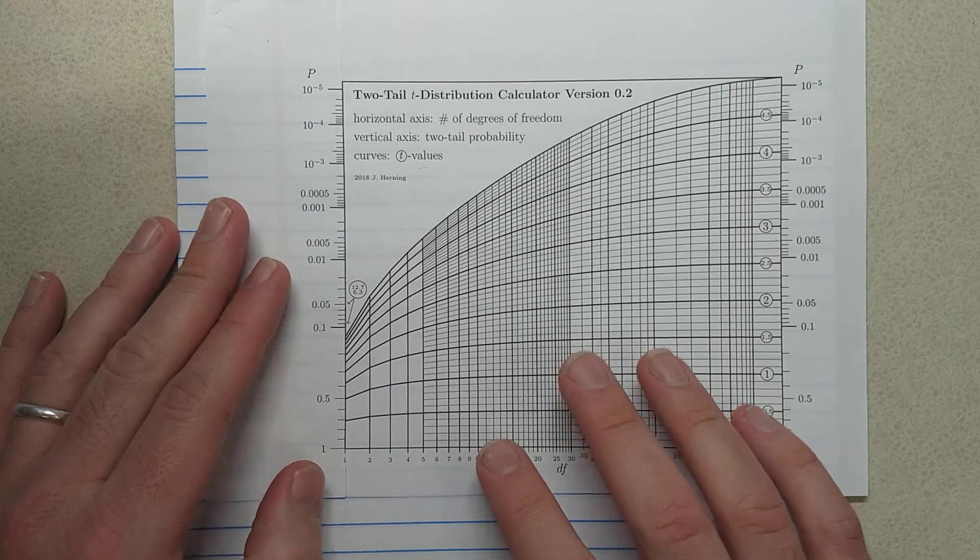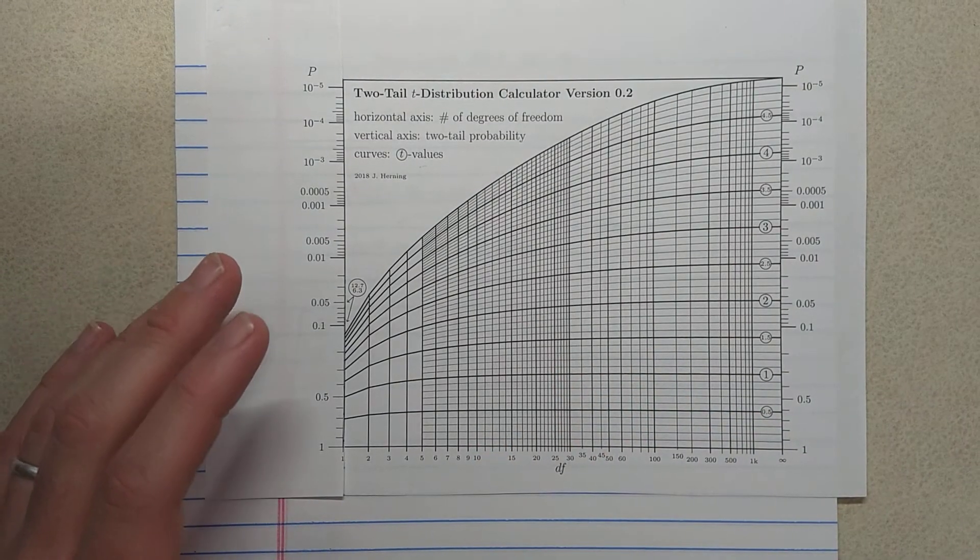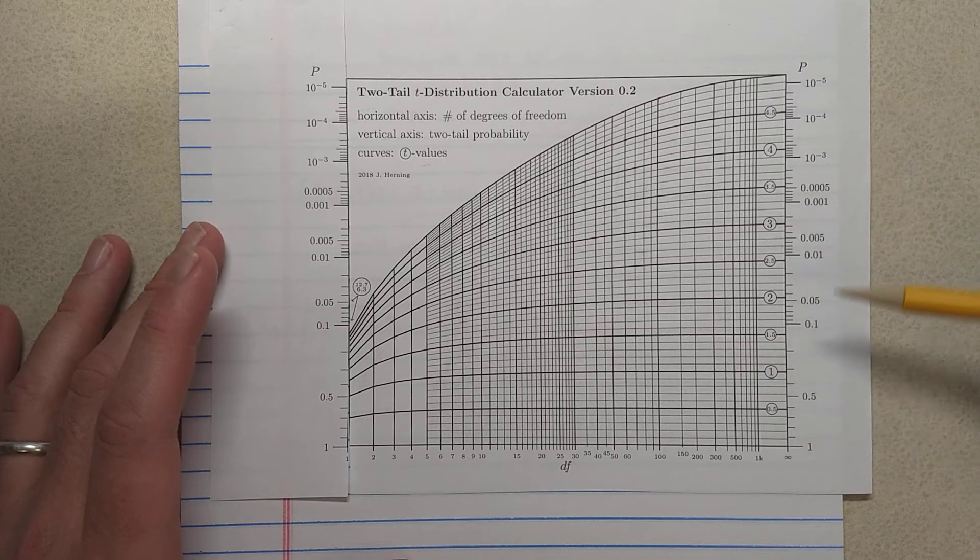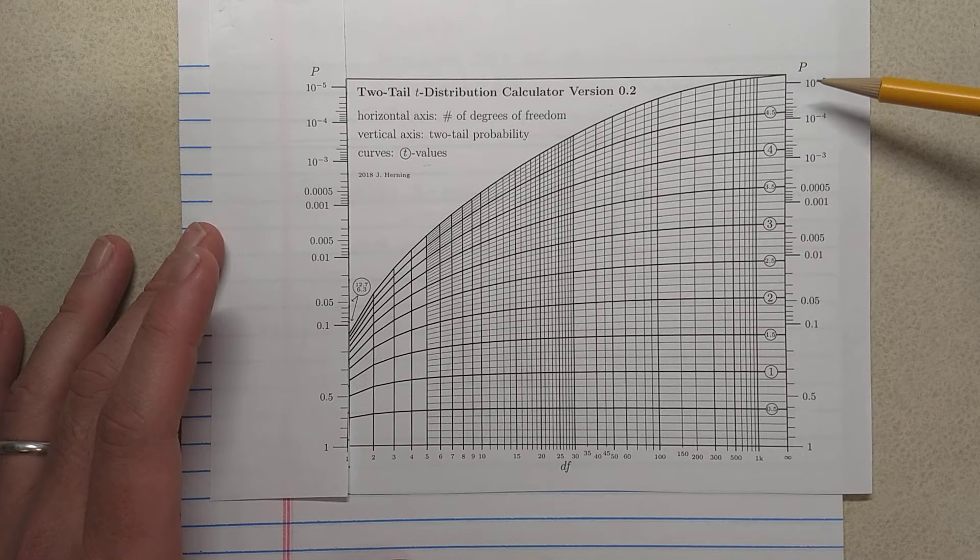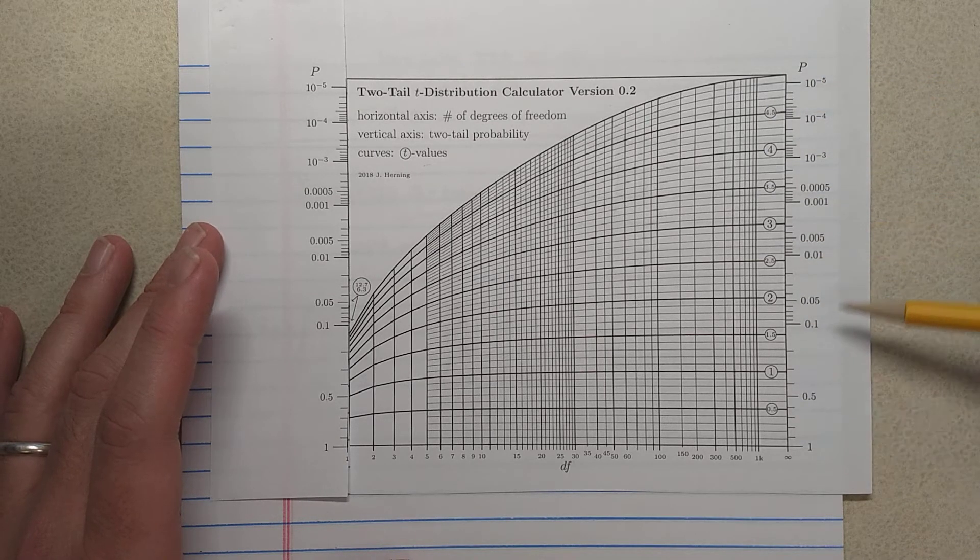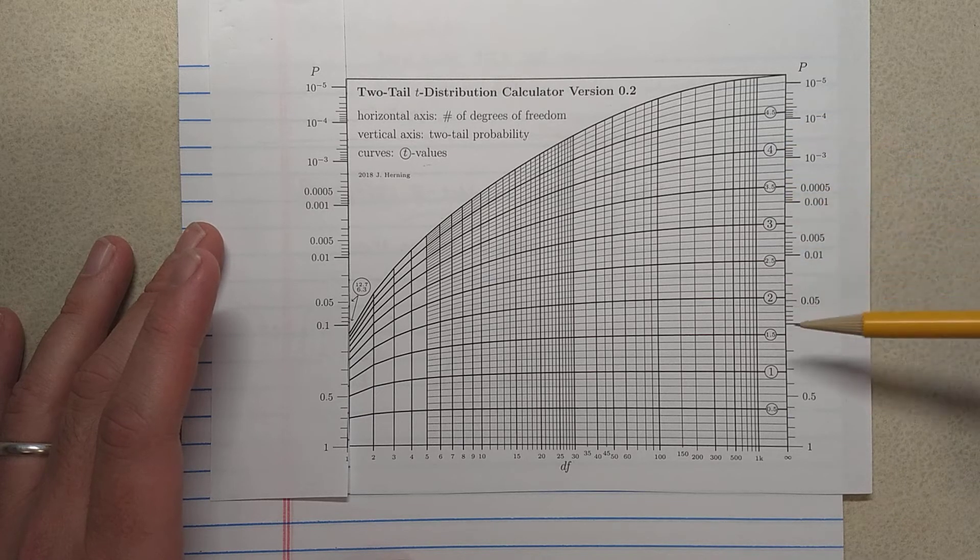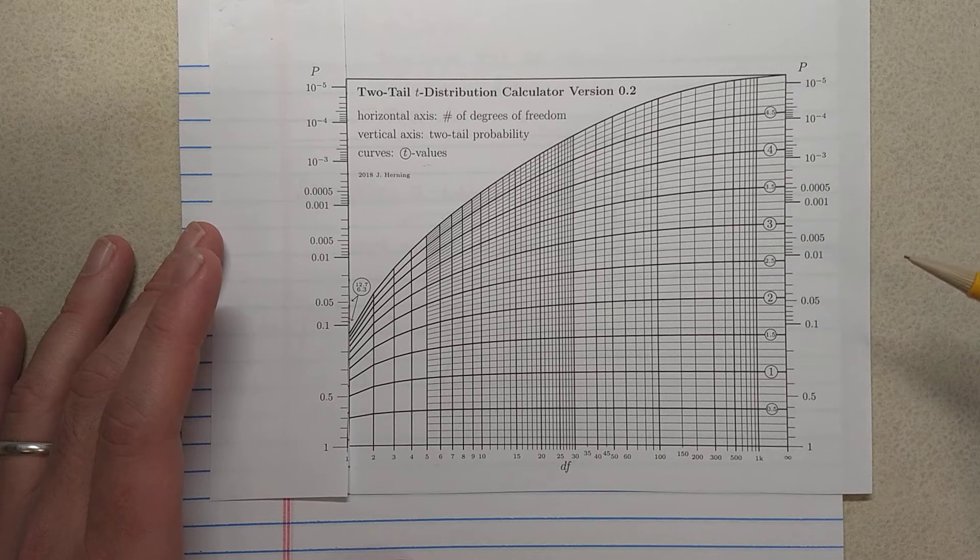So here it is. What it is here is, on the right, essentially what you're seeing on the right is like a z-table. And so here you have probabilities from a two-tailed distribution. And then here you can see these numbers that are circled. Those would be z-values.